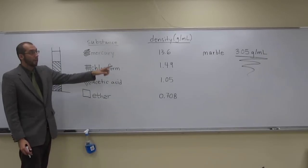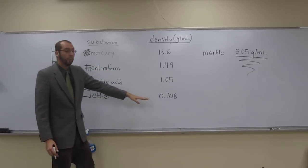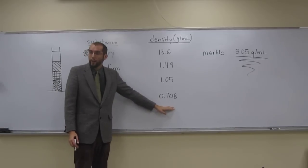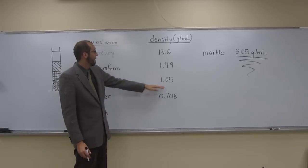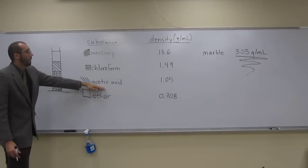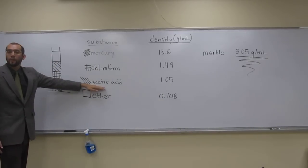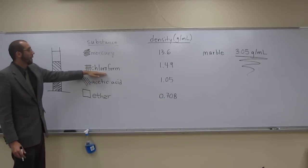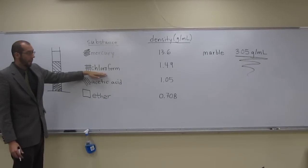Does it have a higher density than the top layer ether? Yes, 3.05 is higher than 0.708. Does it have a higher density than acetic acid? Yes. Does it have a higher density than chloroform? Yes.